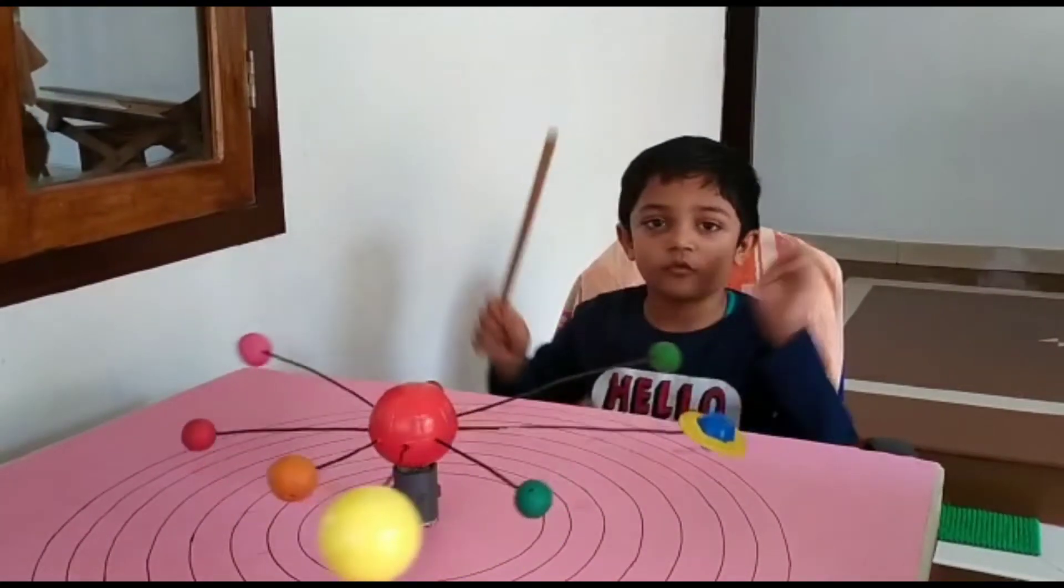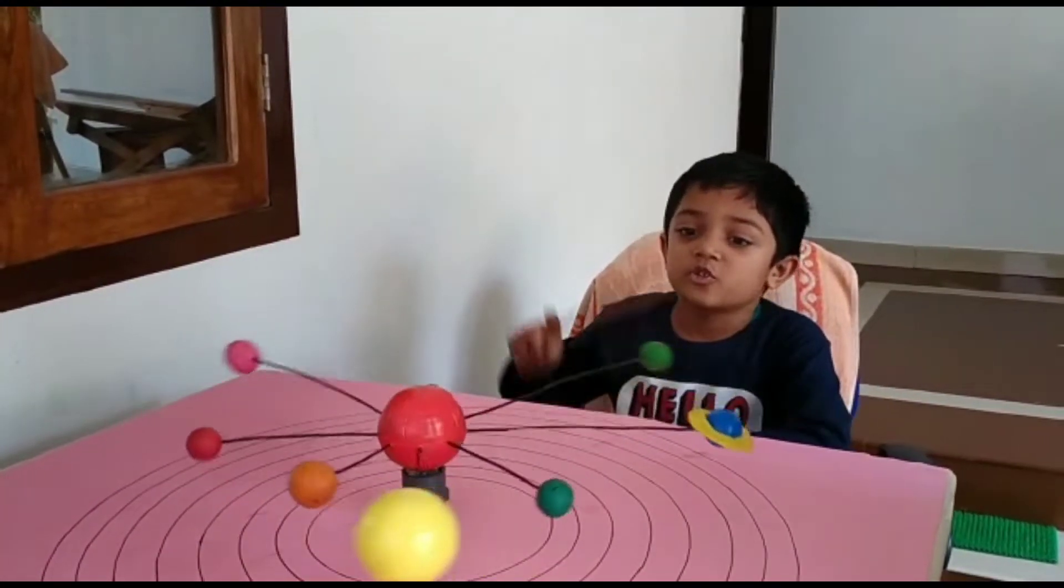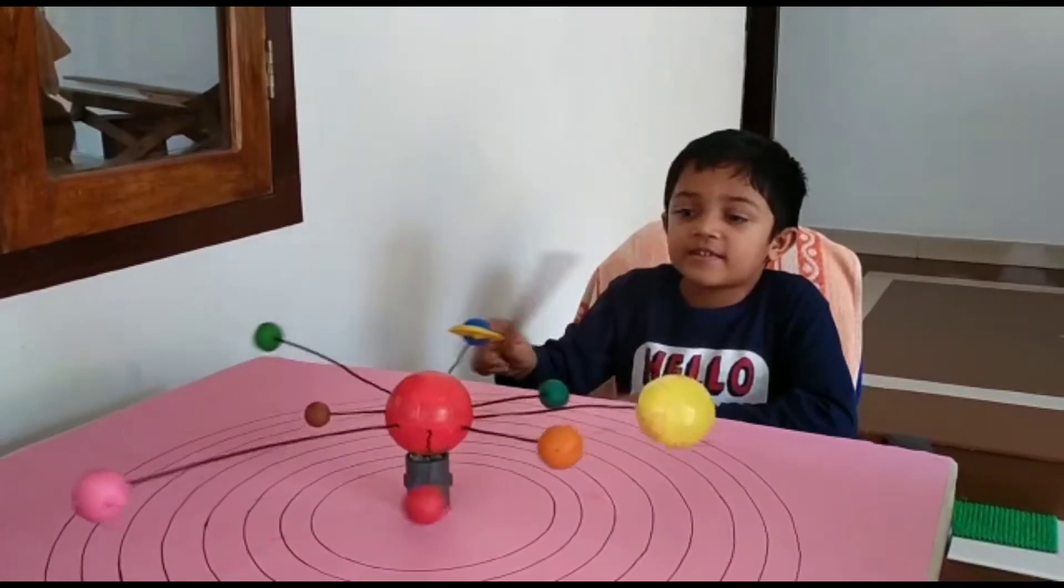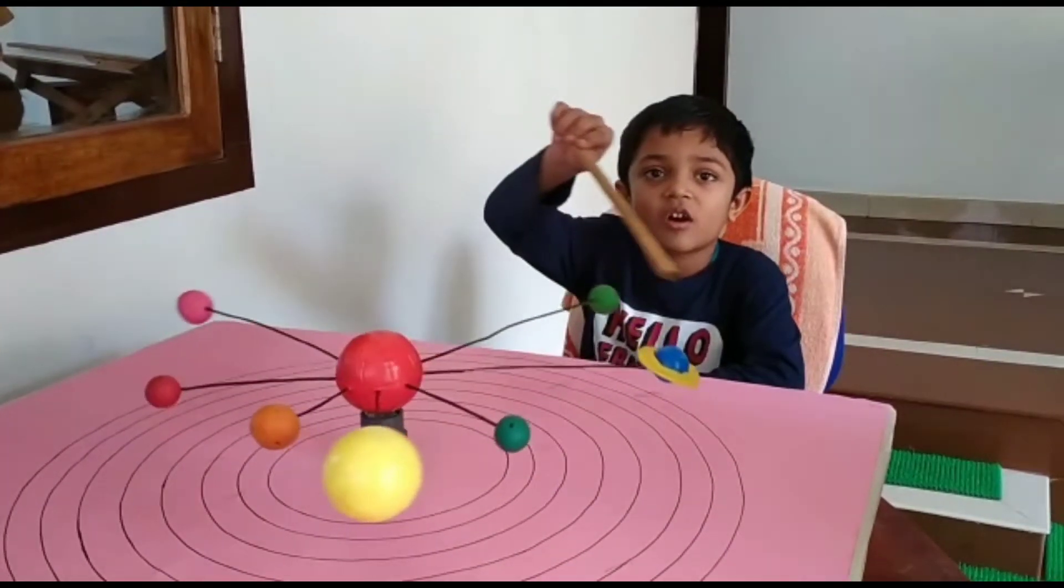Mars is the fourth planet and it is the red planet. Jupiter is the largest planet. Saturn is the second largest planet and it has a ring on it.